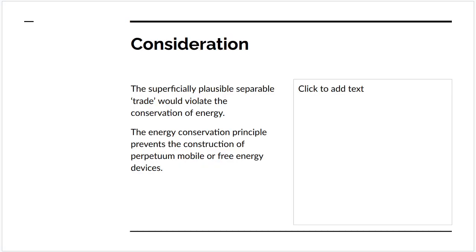But what can we say about this? There's a superficially plausible set of operations which could result in surplus light. But the energy conservation principle prevents the construction of perpetual motion machines. It prevents the construction of machines to extract free energy from nothing.